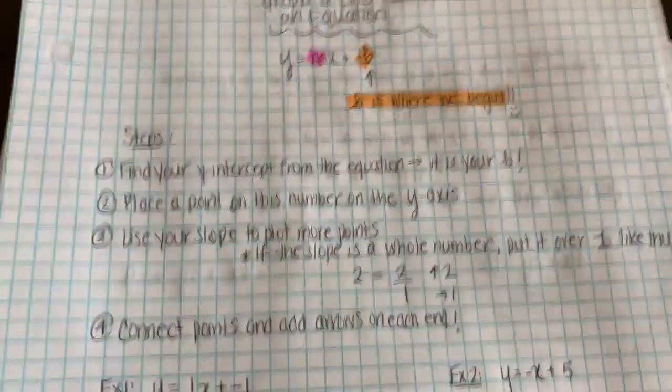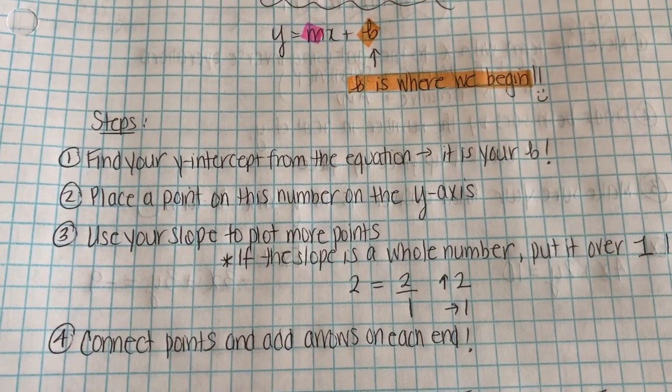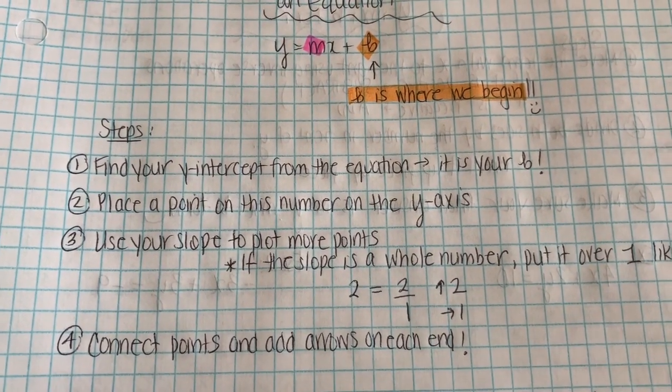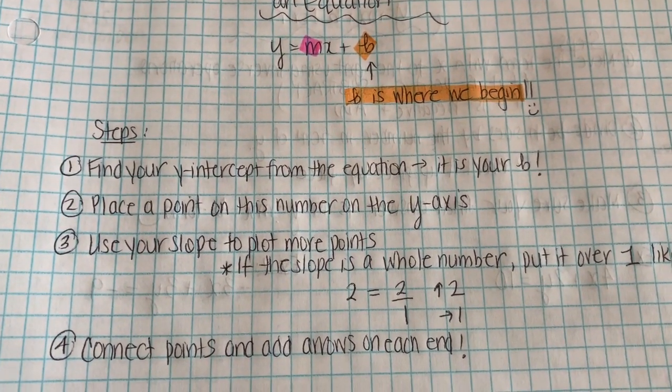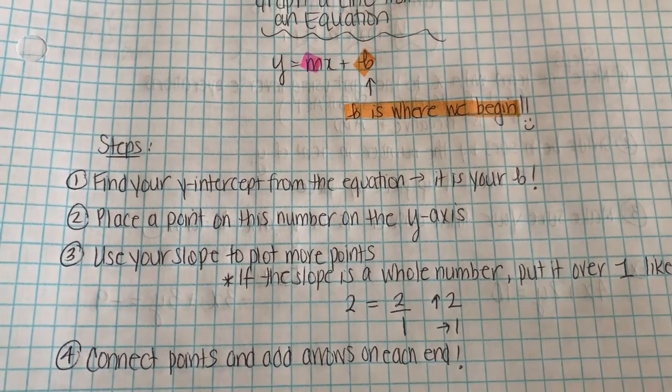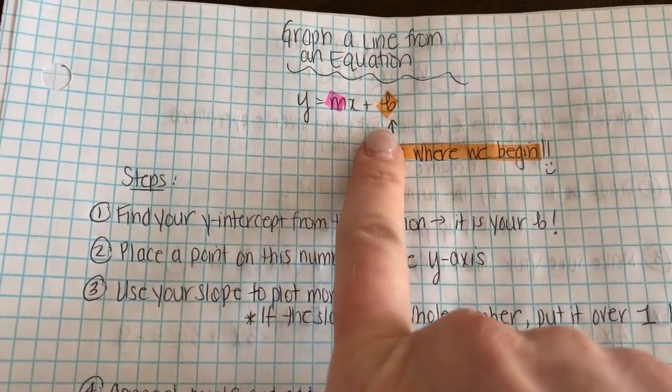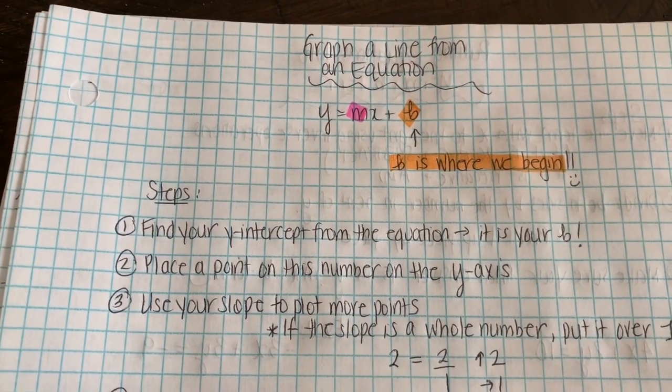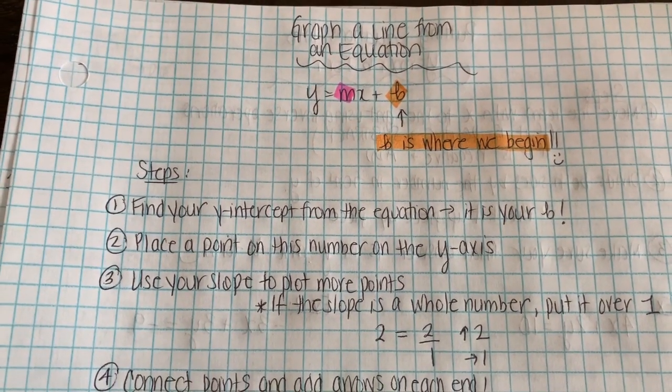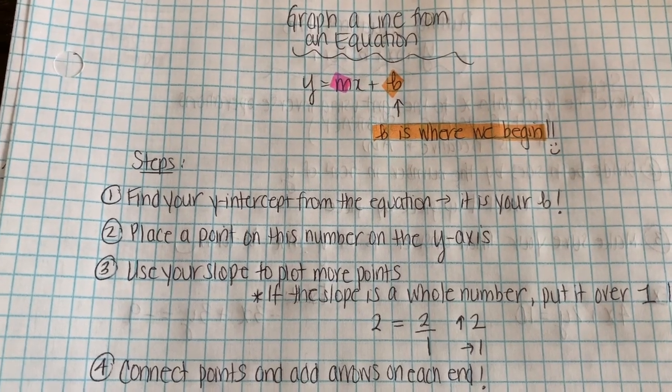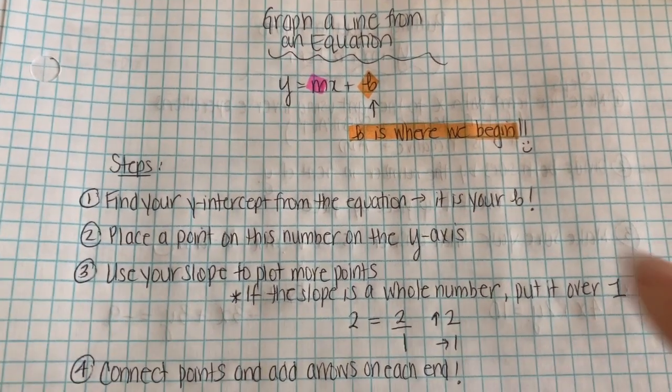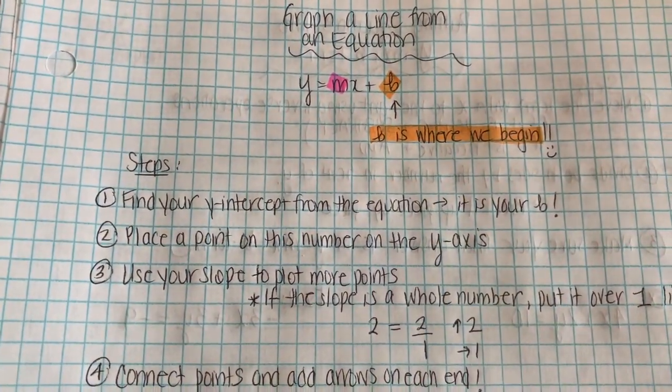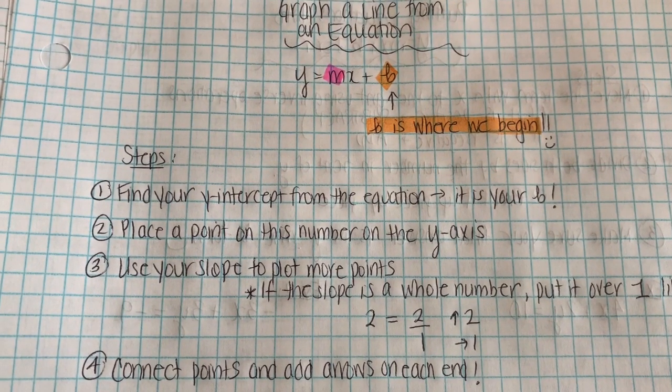So I wrote out some steps again for you. Step one, you look at your equation and determine what's your y-intercept. Your y-intercept is b. So whatever that number is in the equation, that's going to be where you begin. From there, you're going to place a point on that number on the y-axis. So if your b is 2, you go to the y-axis and put a point at 2.